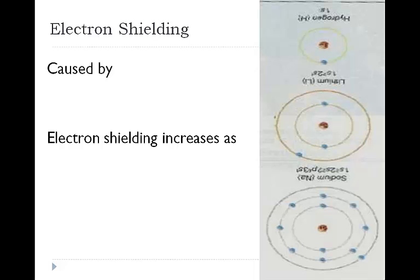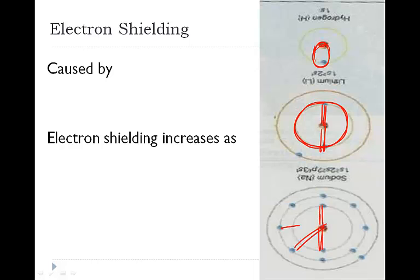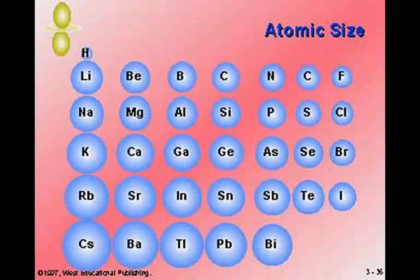Electron shielding is going to increase as we move down a group. Hydrogen has one energy level, so it's a very small area. In lithium, with two energy levels, we shield slightly more because the first energy level is full and pulls on the nucleus a bit more. Down at sodium with energy level three, all the electrons in energy levels one and two are shielding the electromagnetic force from the valence electron out in the outer shell.